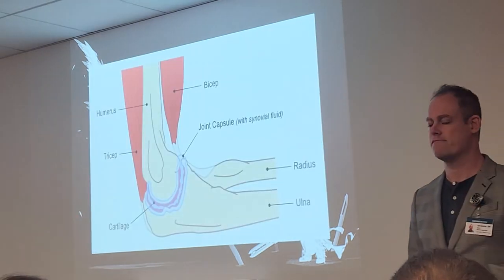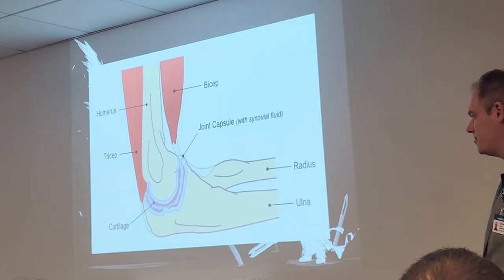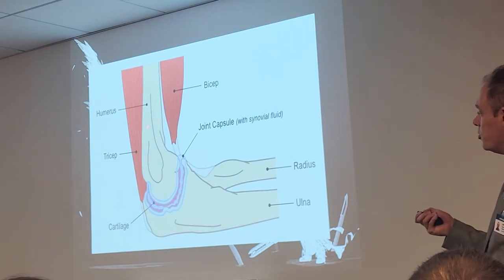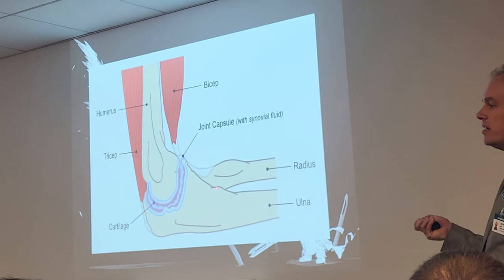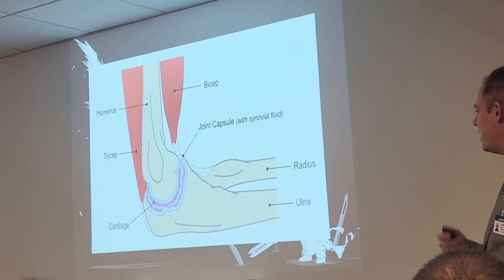His chart said he was at a pain level eight. Here's what it looks like in the elbow — there's your humerus connecting to the ulna. We're going to learn some of that today.